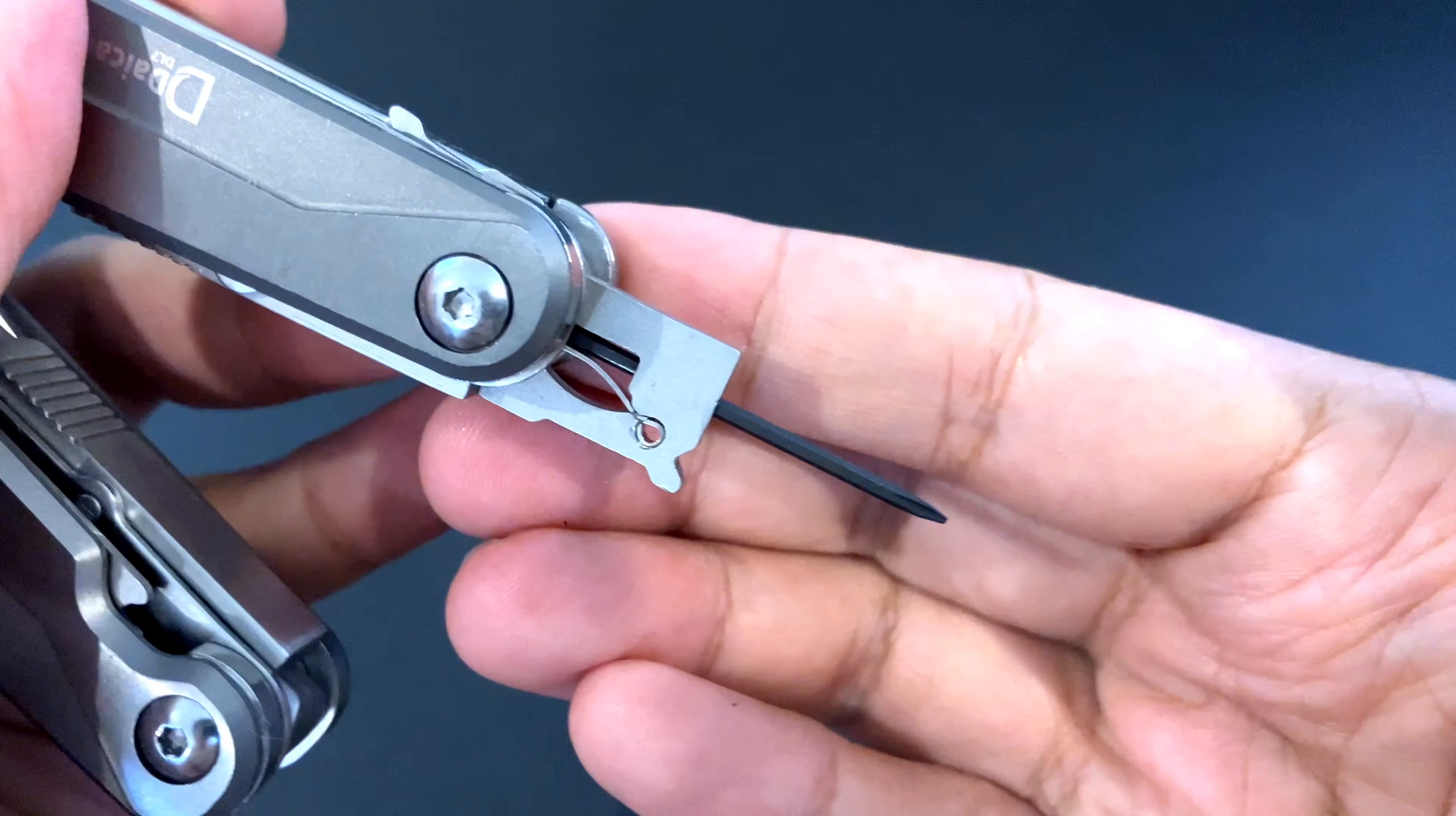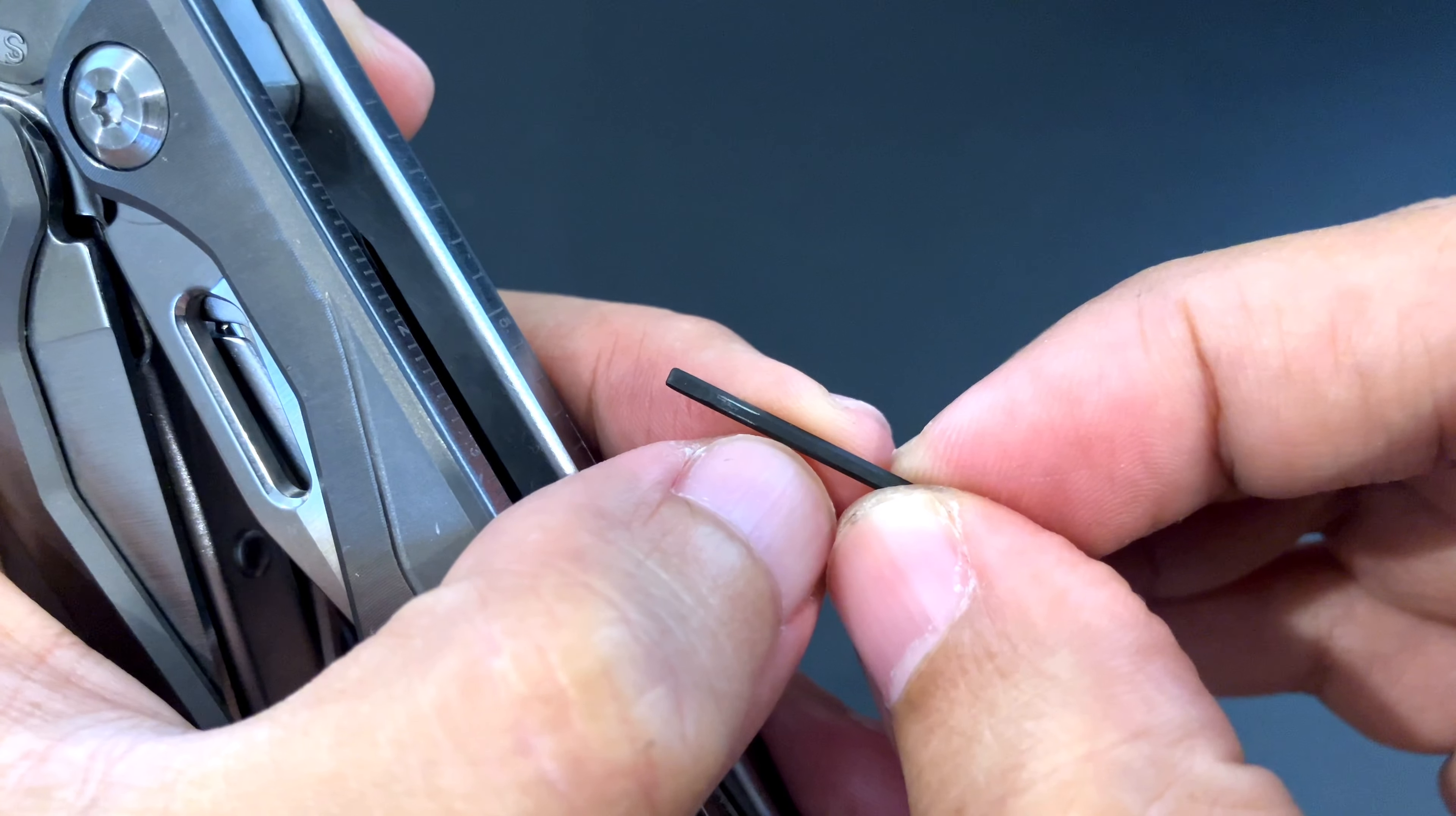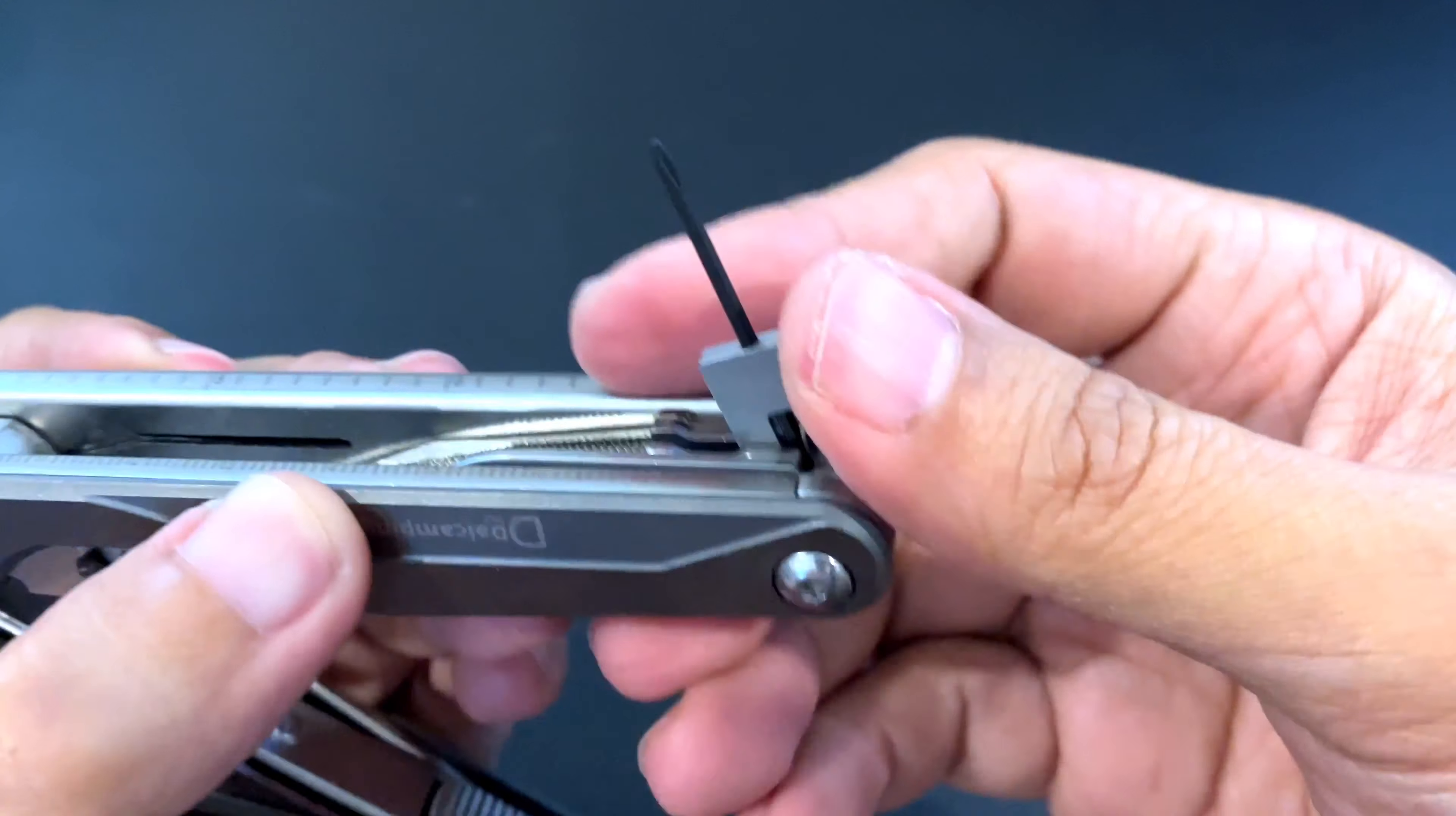You have here something new that you don't usually find in the Chinese multi-tools. It's actually a bit holder for the precision screwdrivers. We have here a Phillips head and then on the other end, a flat head. So we just slide it inside here. So you have two precision screwdrivers.